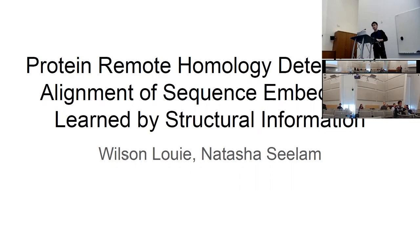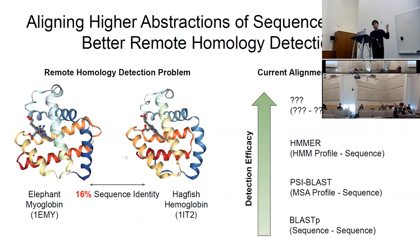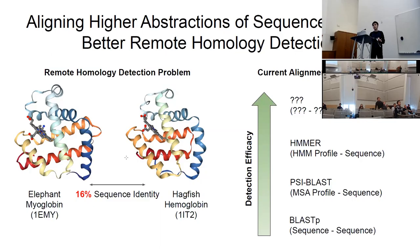My partner and I looked into improving protein homology detection by aligning sequence embeddings. Here's the problem: consider these two proteins — they are very similar in structure and function. One is a myoglobin and one is similar, but their sequence identity is extremely small, only around 60%, with one from an elephant and one from another species. Detecting this type of remote homology is very challenging using a purely alignment-based system.